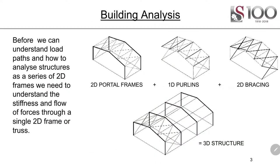Here we've got a typical portal frame building which in three dimensions consists of various components, but we break it into two-dimensional frames along with one-dimensional purlins in pure bending or axial load, depending on how we design it, and then two-dimensional bracing which provides lateral stability.